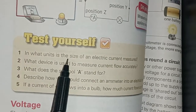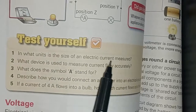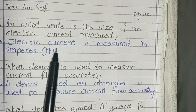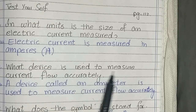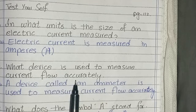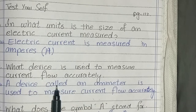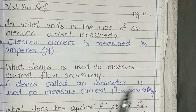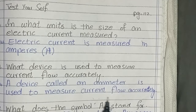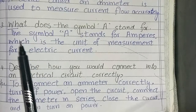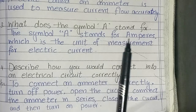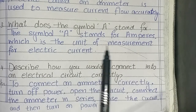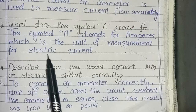Fourth test yourself, page number 112. Question: In what units is the size of an electric current measured? Electric current is measured in amperes, or capital A. What device is used to measure current flow accurately? A device called an ammeter is used to measure current flow accurately. What does the symbol A stand for? The symbol A stands for amperes, which is the unit of measurement of electric current.